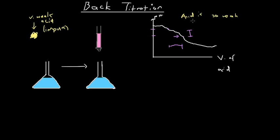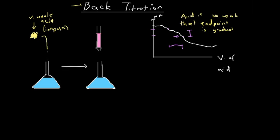We're going to have to look for a different way to find out the number of moles of acid in this impure sample. This acid is so weak that the endpoint is quite vague and gradual, and so we're going to have to look for a different way to do this — and that is where back titration comes in. We add this very weak acid to a solution of a strong base in excess.